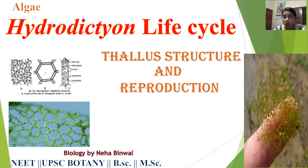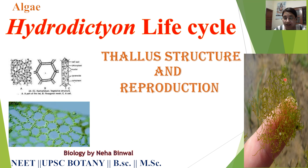If you have seen the net-like structure in ponds or freshwater, that means it is Hydrodictyon. Hydrodictyon is commonly known as water net, as you can see the net-like structure. If you see it with the naked eye you will see the structure one way, and with the microscope you will see it differently.